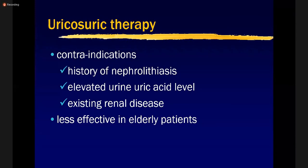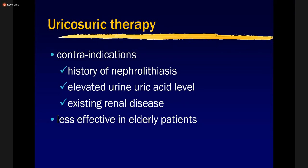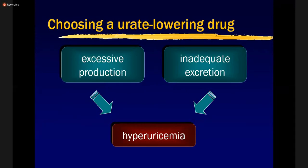Contraindications of uricosuric agents include history of nephrolithiasis, elevated urine uric acid levels, existing renal disease, and they are less effective in elderly patients. These are directly correlatable to the mechanism: blocking reabsorption increases urinary uric acid, raising the risk of stone formation.